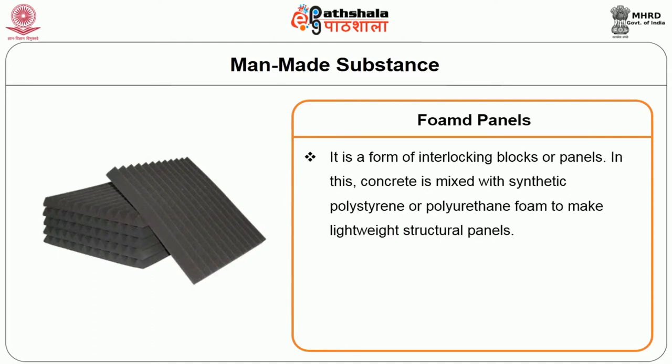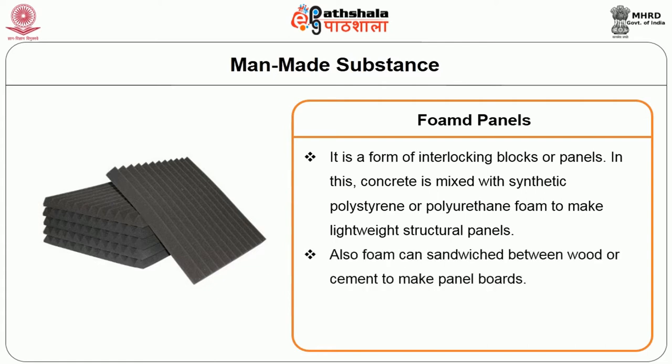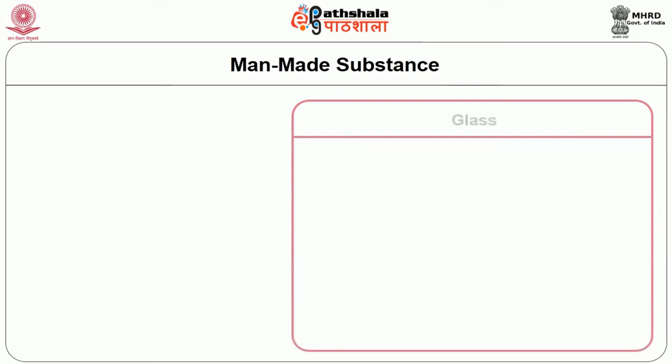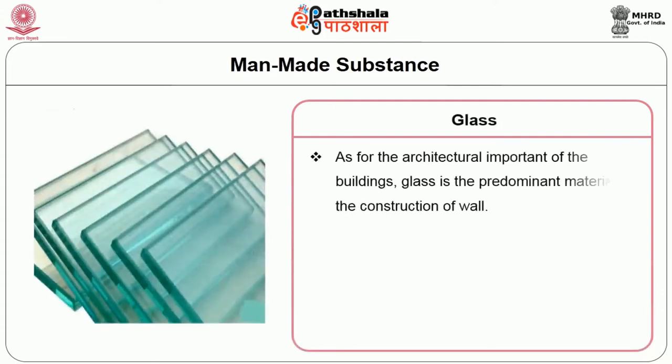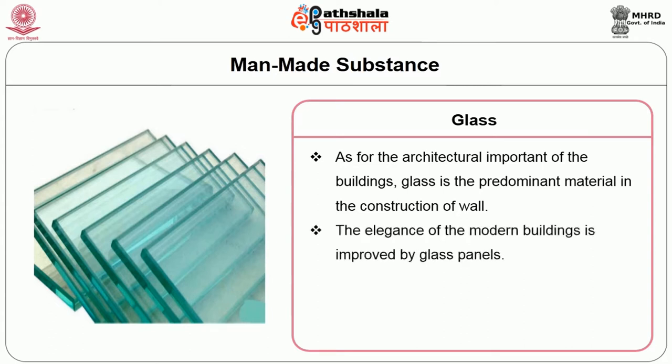In concrete construction, concrete is mixed with synthetic polystyrene or polyurethane foam to make lightweight structural panels. Foam can also be sandwiched between wood or cement to make panel boards. Glass is the predominant material for wall construction in terms of structural importance, and glass panels improve the elegance of modern buildings.